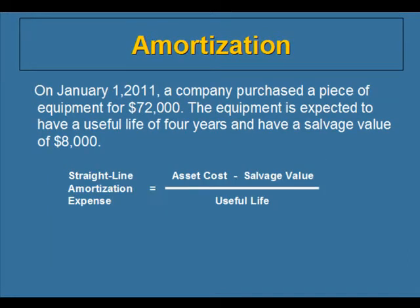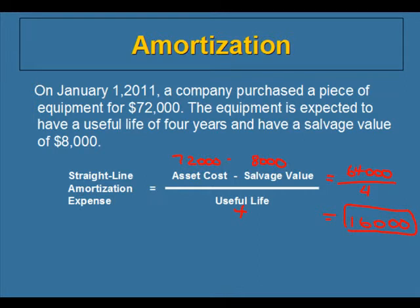We calculate amortization using this formula: assets minus salvage value divided by useful life. This is called the straight-line method for calculating amortization. There are lots of other ways, and we cover that in a different course. The cost of the asset was $72,000, the salvage value is $8,000, and the useful life is four years. So we subtract $8,000 from $72,000 to get $64,000, and divide by four. The result is $16,000, representing the amortization of this piece of equipment for one year — how much it has declined in usefulness.